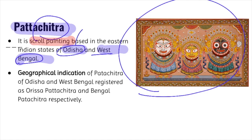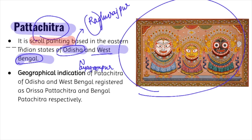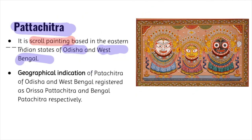In Odisha, Raghurajpur is the famous village for Patachitra painting. In West Bengal, Naya village in Medinipur district is famous. Both the Odisha Patachitra and Bengal Patachitra have received the Geographical Indication tag.